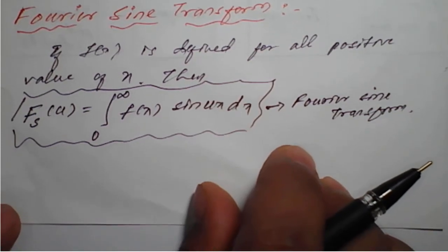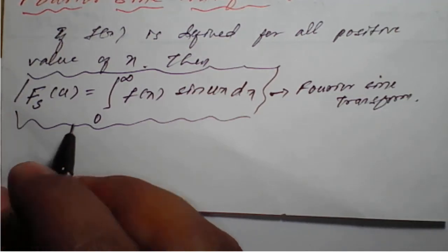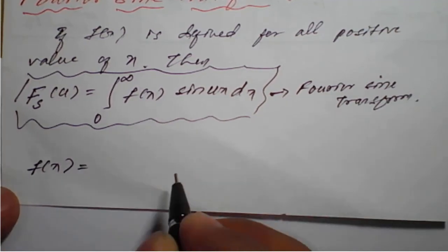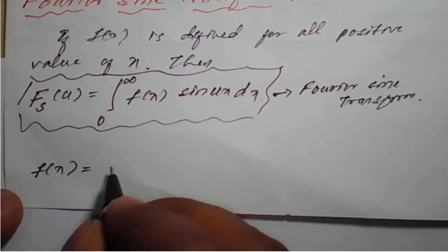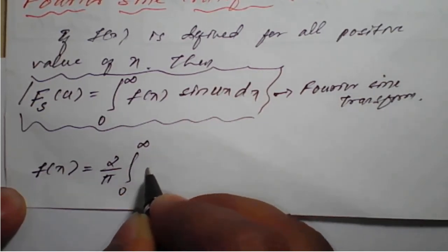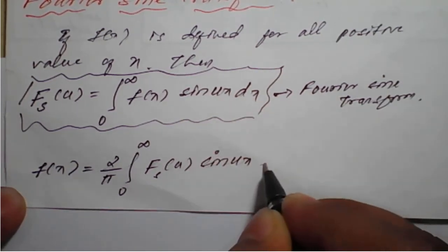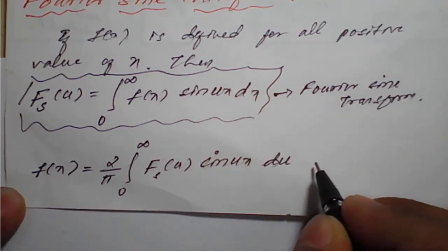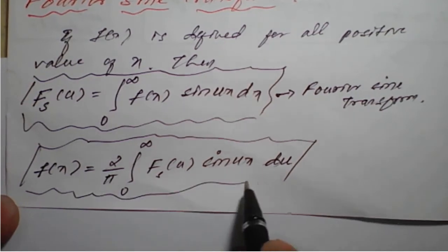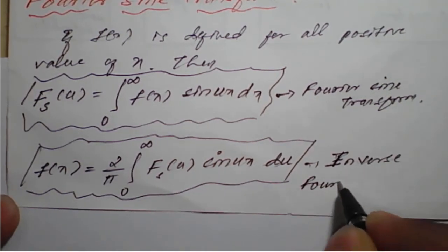Similarly, the inverse Fourier sine transform is given by: f of x equal to the integration from 0 to infinity of capital Fs of u into sine of u x into du. This is the inverse Fourier sine transform.